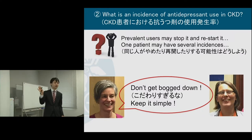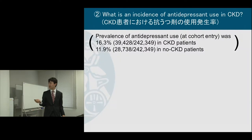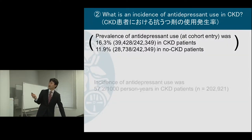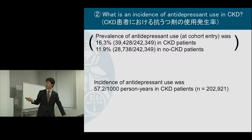I learned that in pharmacoepidemiology, sometimes you need to make a decision to be simpler and not spend too much time. The incidence of antidepressant use was 57.2 per 1,000 person-years in CKD patients.